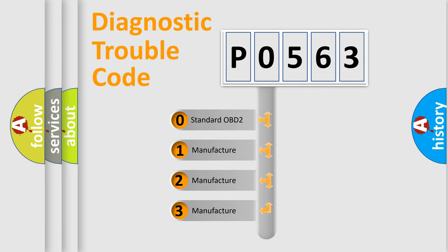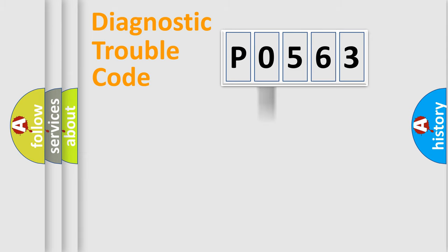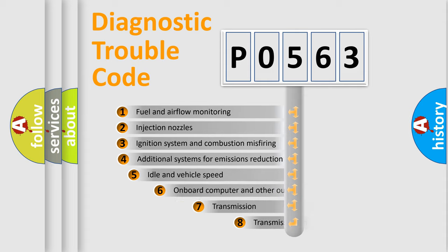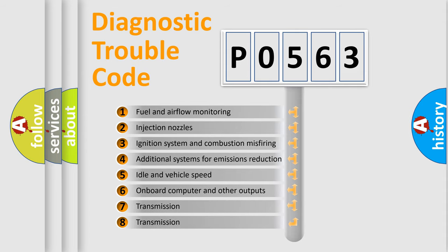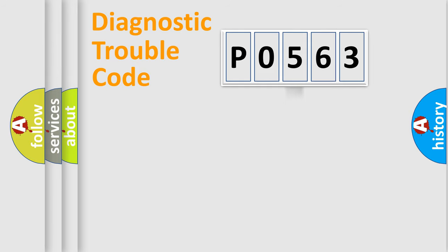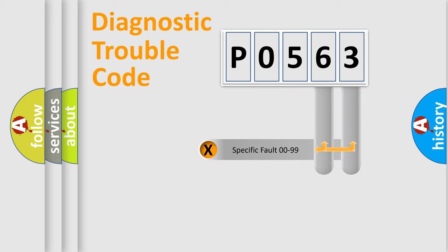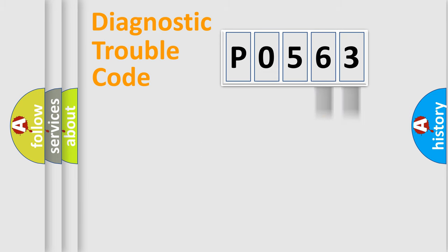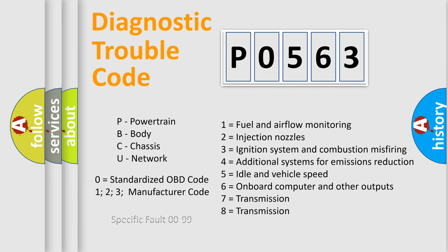If the second character is expressed as zero, it is a standardized error. In the case of numbers 1, 2, or 3, it is a manufacturer-specific expression of the car error. The third character specifies a subset of errors. This distribution is valid only for the standardized DTC code, and only the last two characters define the specific fault of the group. Such a division is valid only if the second character code is expressed by the number zero.